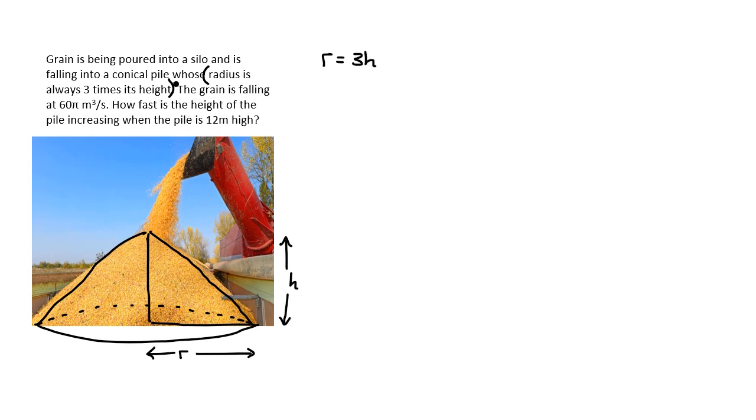And then they say that the grain is falling at 60 pi meters cubed per second. Now, meters cubed measures volume, so the volume is increasing at 60 pi meters cubed per second. That means we can say that dv dt, rate of change in volume with respect to time differential, is equal to 60 pi.